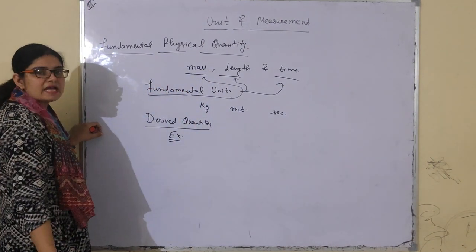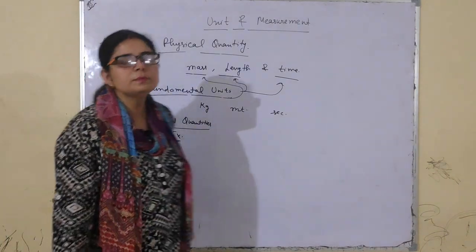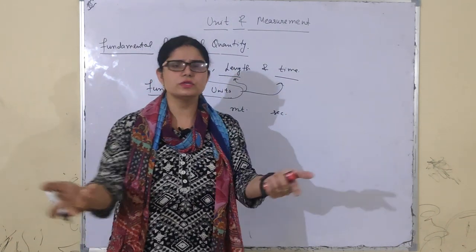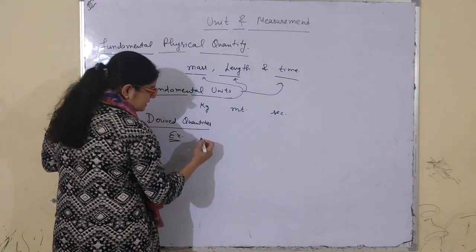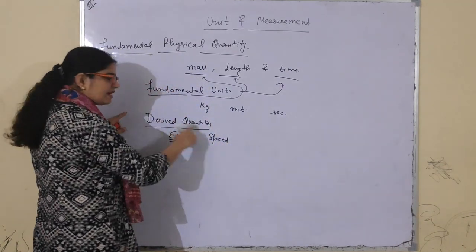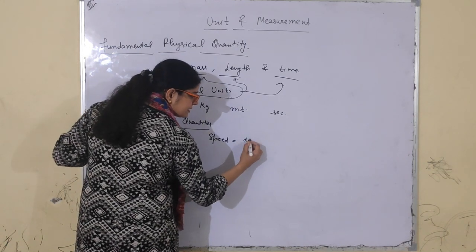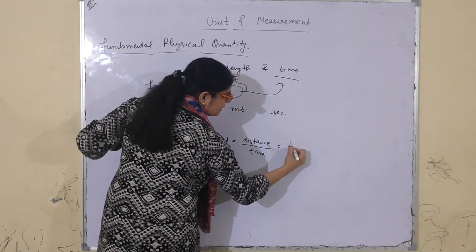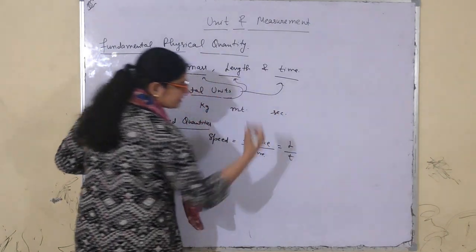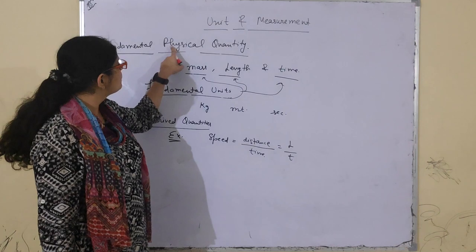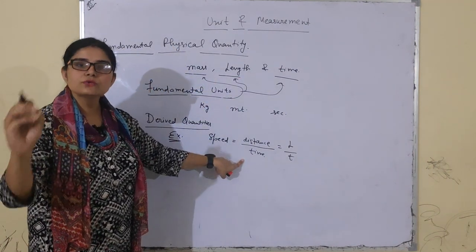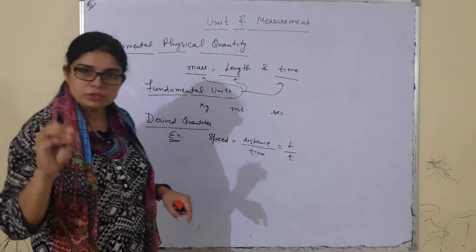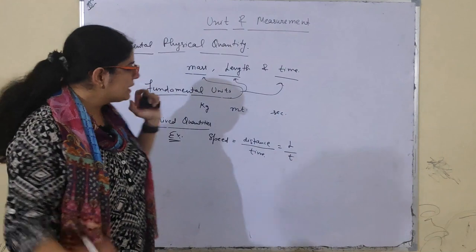Derived quantities: the quantities which can be derived by using fundamental physical quantities — mass, length, and time — those are called derived physical quantities. For example, speed = distance upon time = length upon time. Here I have used two fundamental things to derive the quantity — so speed is a derived quantity.